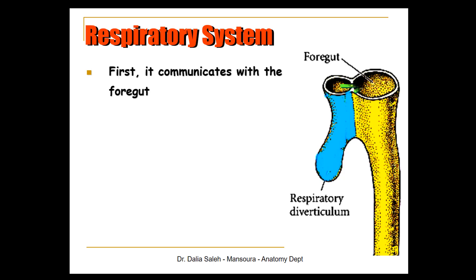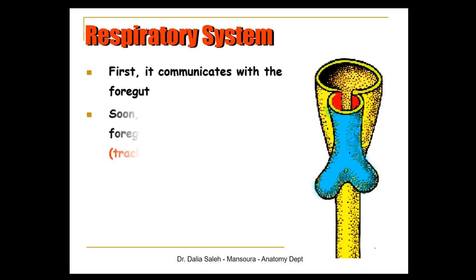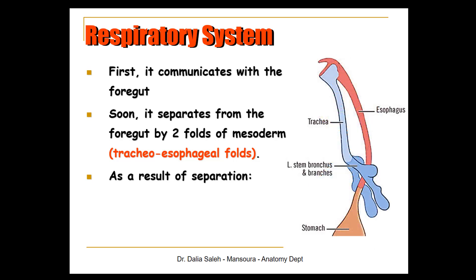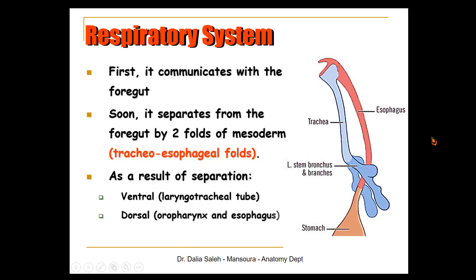Initially, the foregut and respiratory diverticulum communicate with each other. Then they separate by the appearance of two folds of mesoderm called the tracheoesophageal folds. These folds approach each other to form a septum, resulting in separation of the two tubes. We end up with a ventral laryngotracheal tube — its upper part forms the larynx, still communicating with the pharynx through its opening; the distal part develops into the trachea, bronchial tree, and the rest of the lung. The dorsal tube develops into the oropharynx and esophagus.